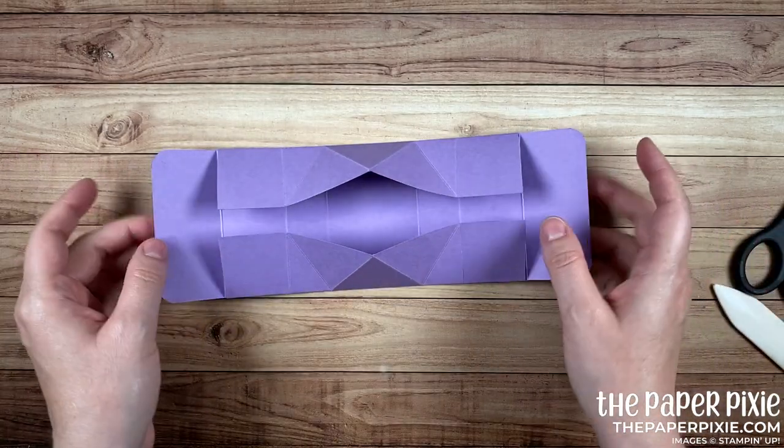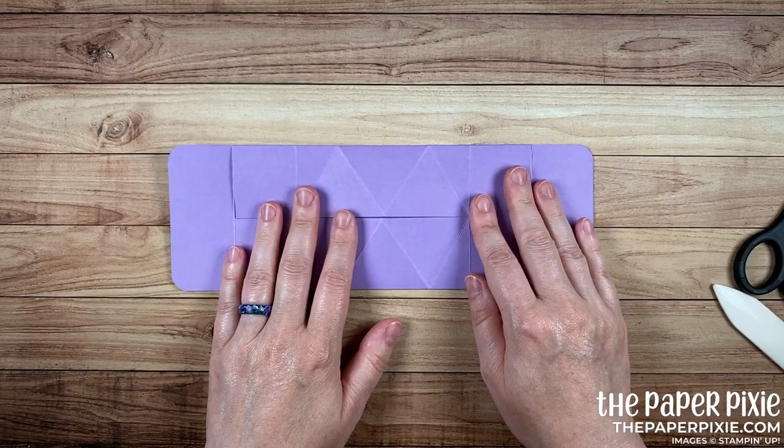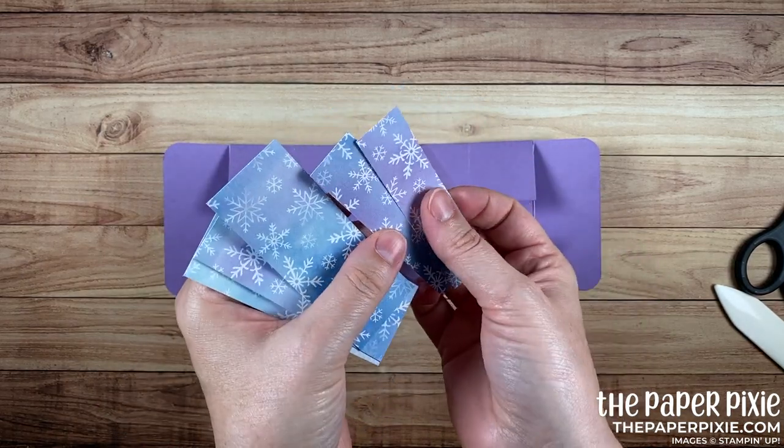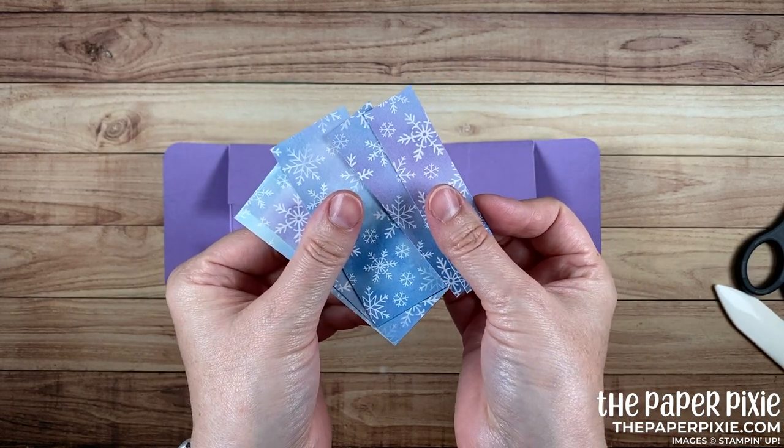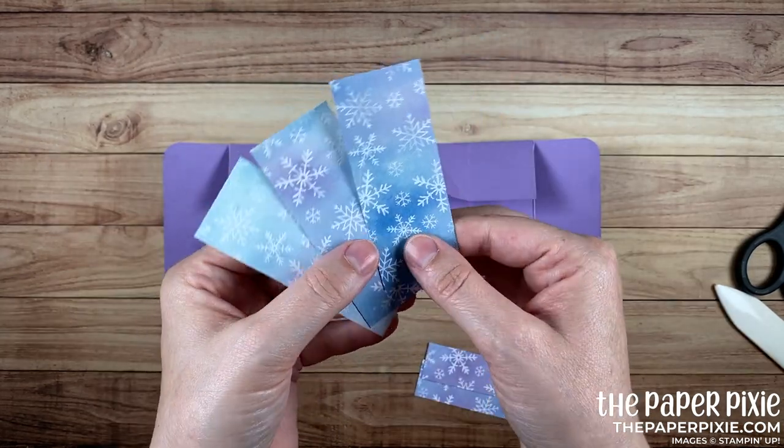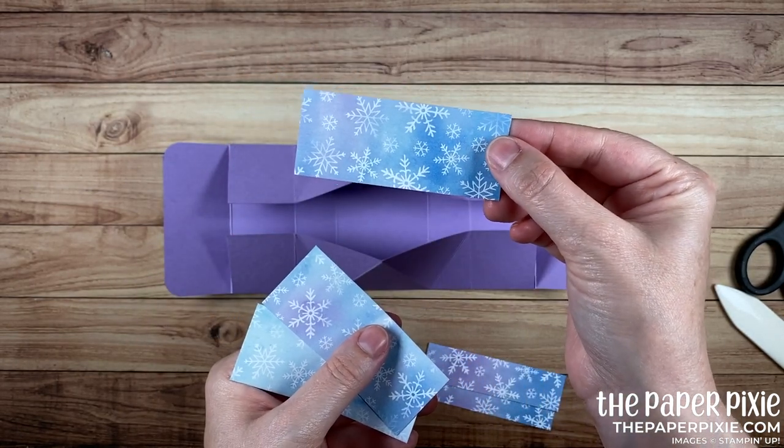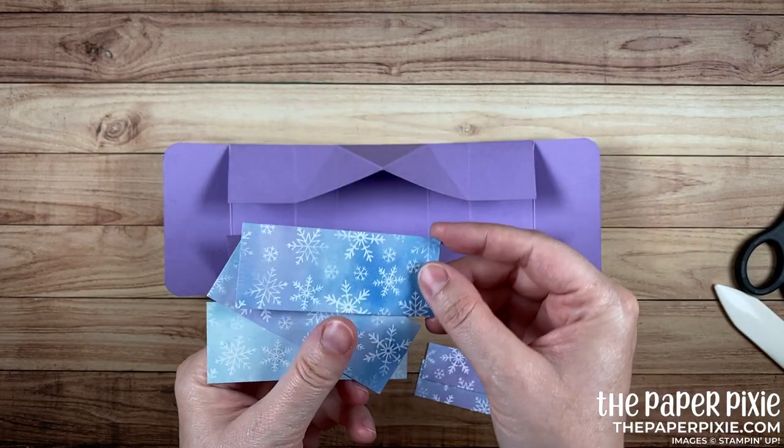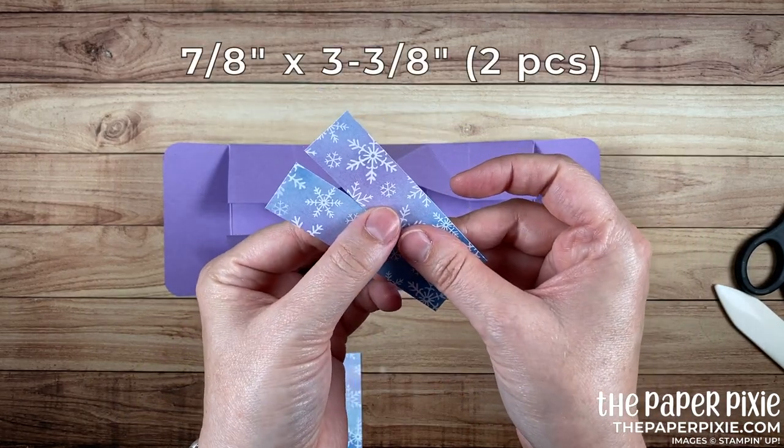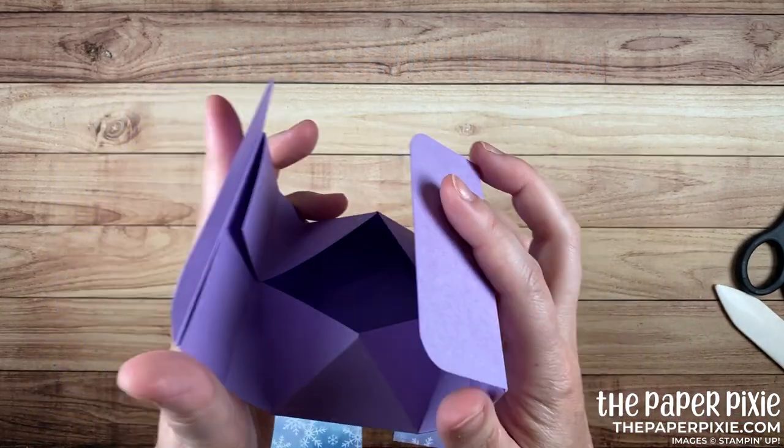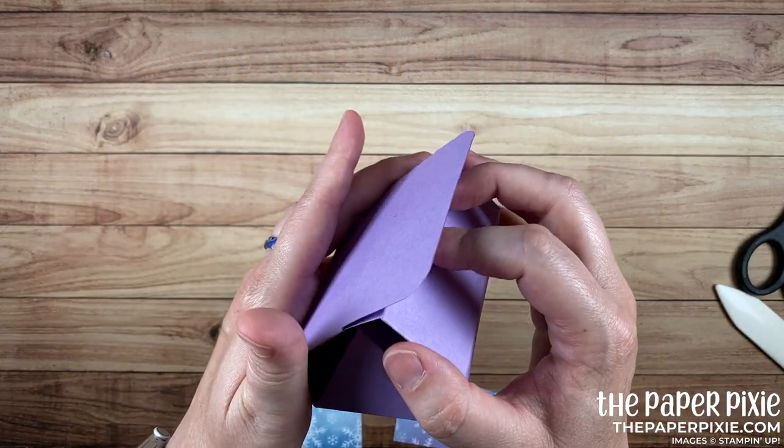All right so next before we put this together we're going to go ahead and do our designer series paper. This is the snowflake wishes designer series paper. I love the purples and blues and the whites in this. I have three pieces that measure one and three-eighths by three and three-eighths and if your pattern was directional you'd want to make sure this was in landscape. And then I have two pieces that measure seven-eighths by three and three-eighths.